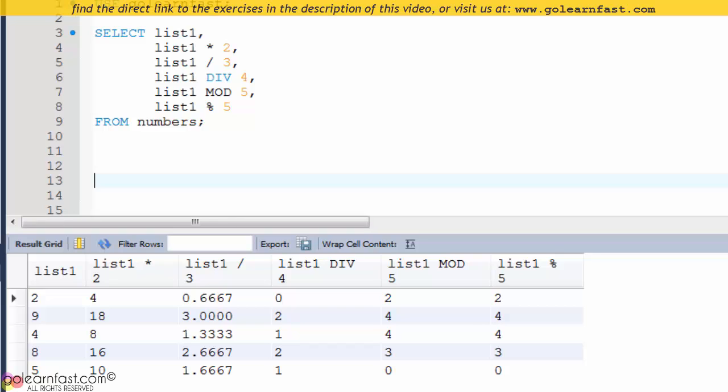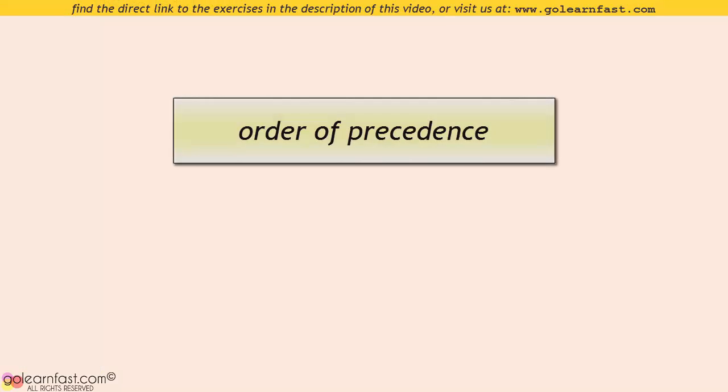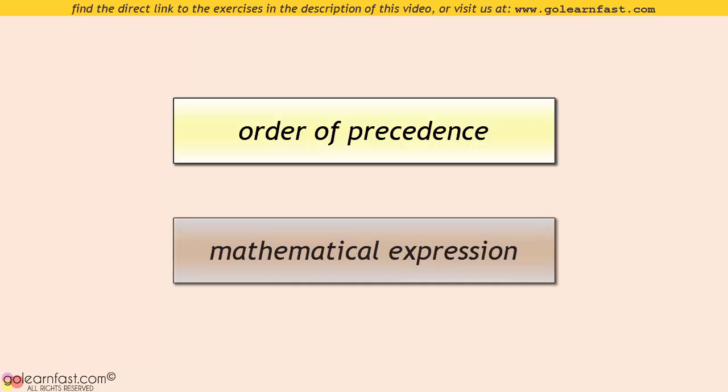Note that MySQL automatically converts the quotient of list1 and 3 from an integer value to a decimal value. In mathematics, order of precedence is a rule used to clarify which procedures should be performed first in a given mathematical expression.